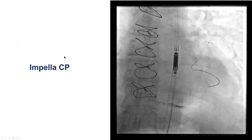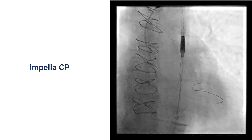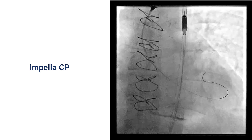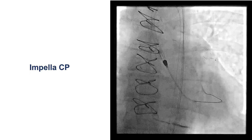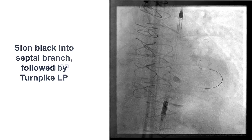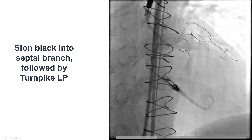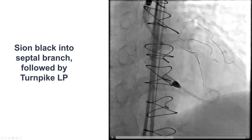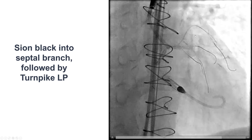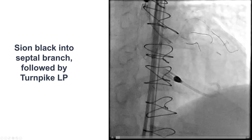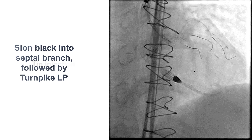Despite the reduced ejection fraction, because we were going to go through one of the patient's last remaining vessels, we decided to use hemodynamic support with an Impella-CP device. We were then able to advance easily a Corsair polymer-jacketed wire retrograde from the SVG going into the LAD and then into a septal branch.